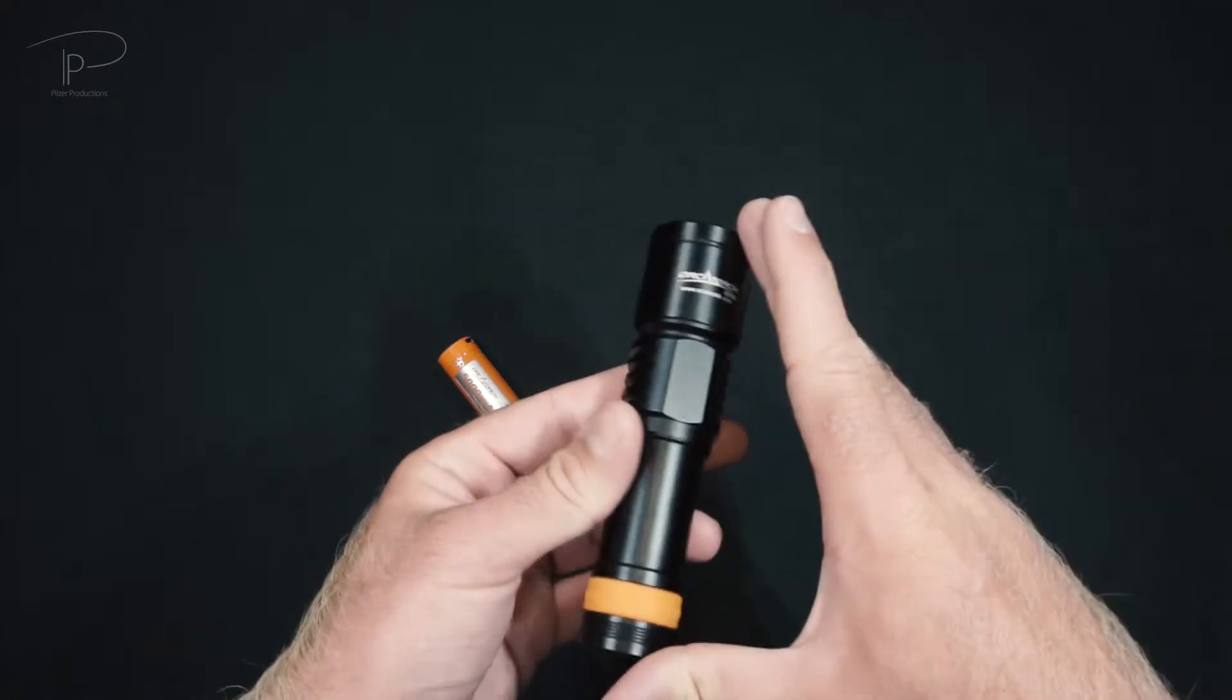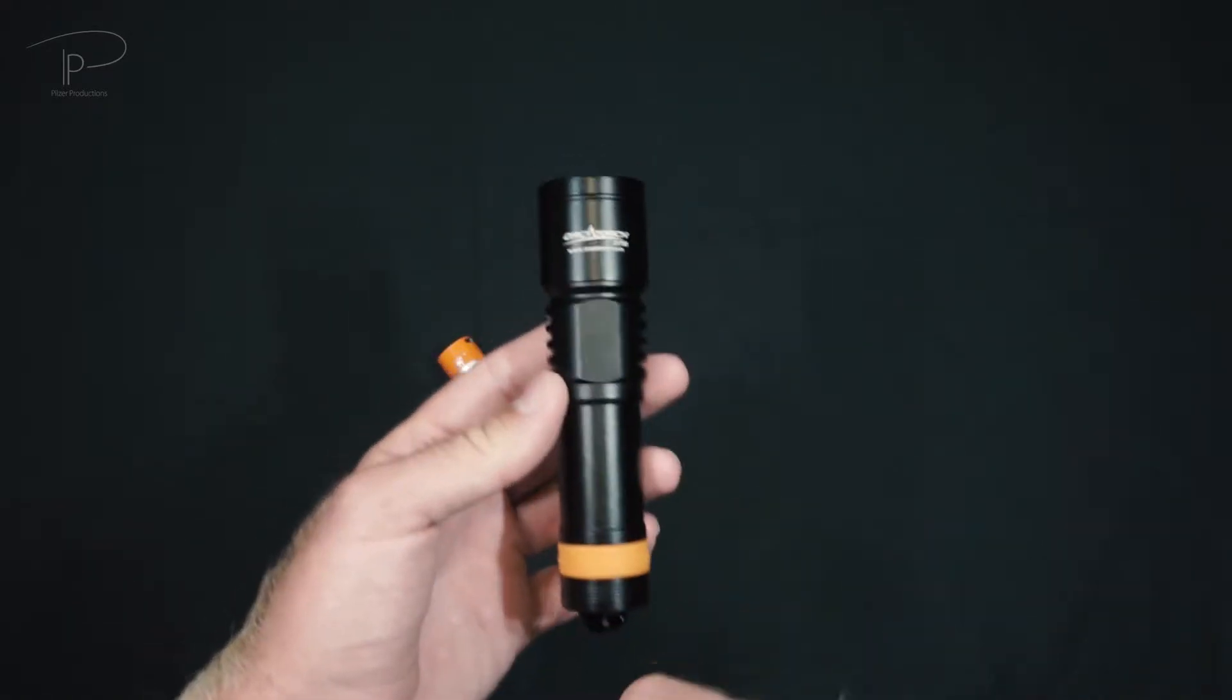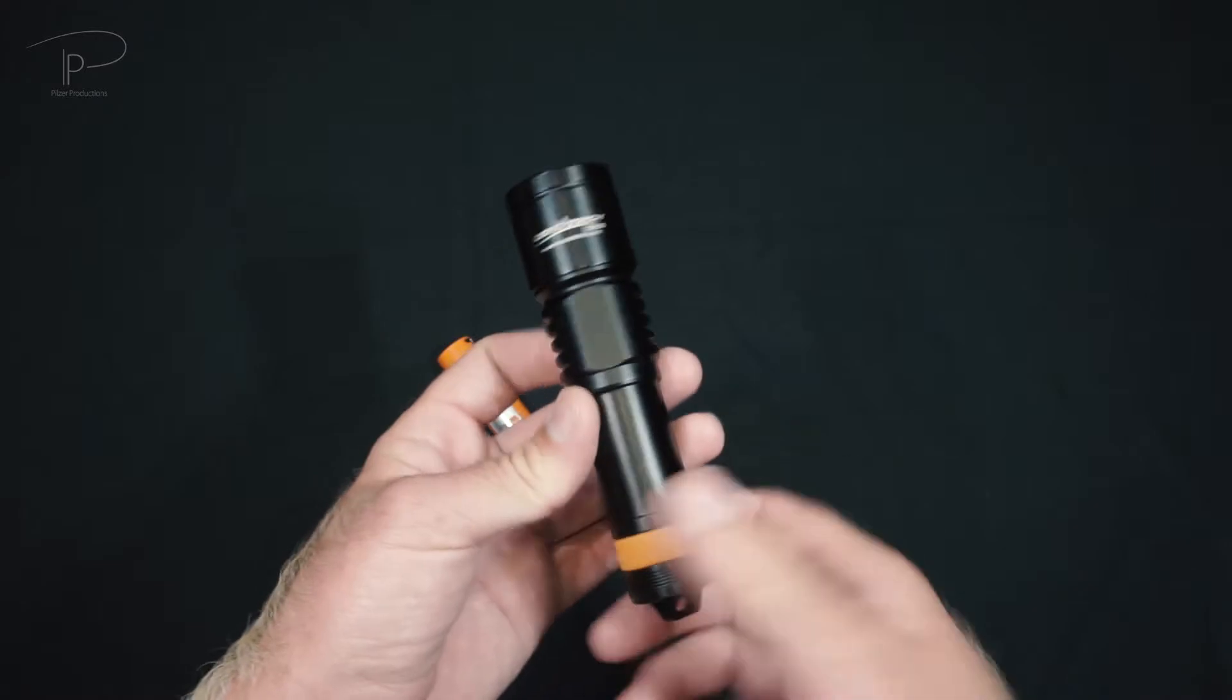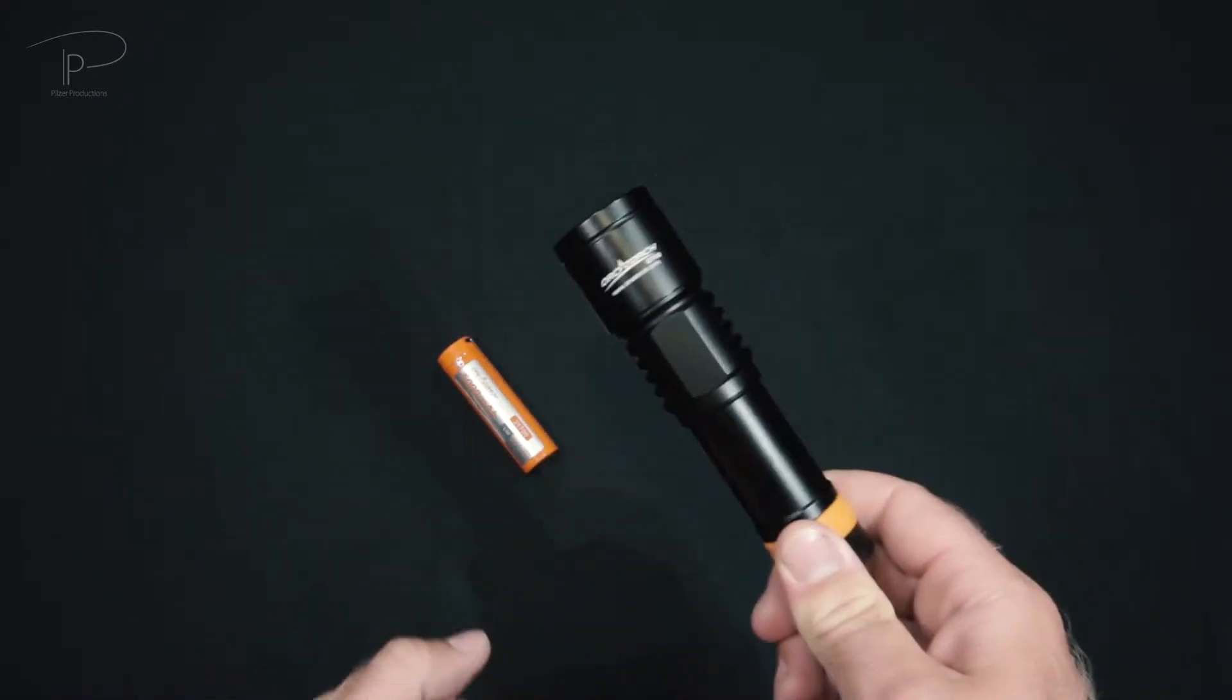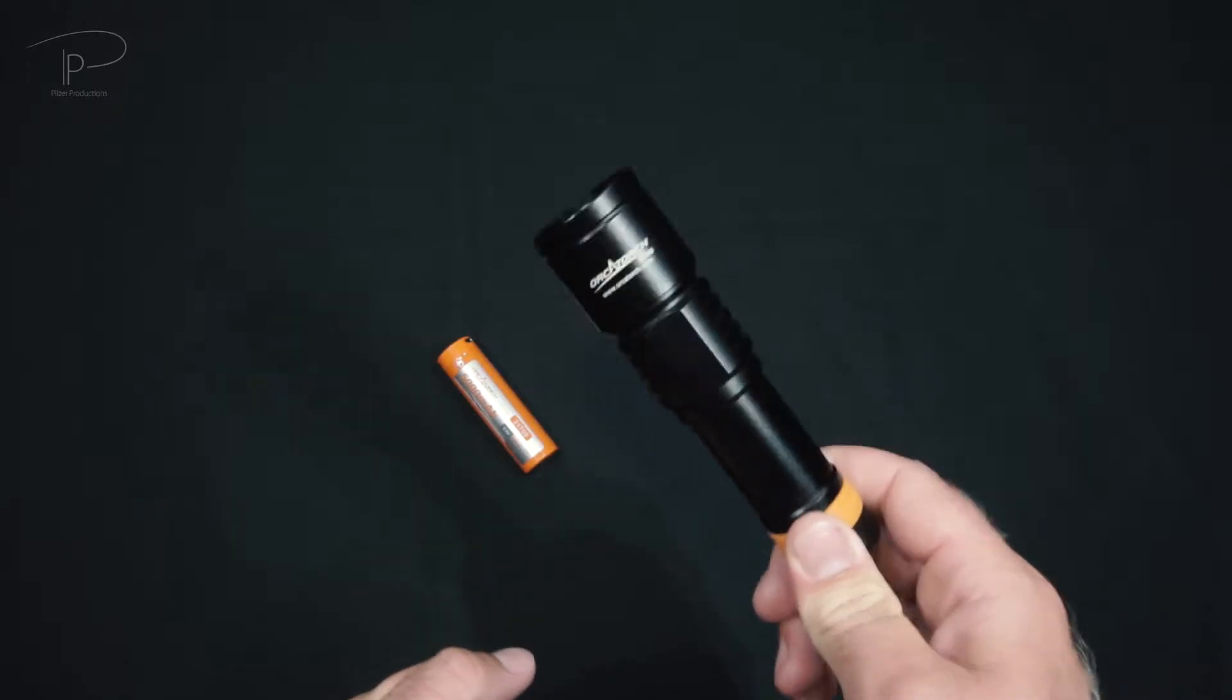Today we are taking a look at a brand new prototype from OrcaTorch. This is a light which has not yet been released, although it is not being sold yet, so you cannot buy this light anywhere yet. It is soon to come out but that's definitely one of the reasons why we're taking a close look at it today.